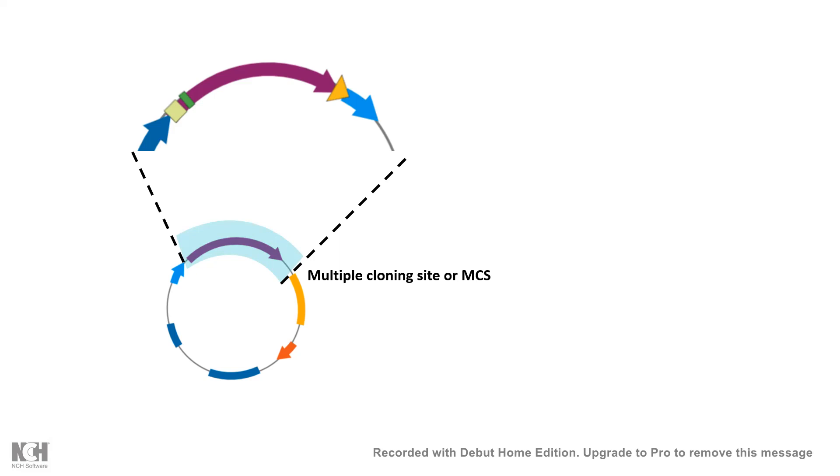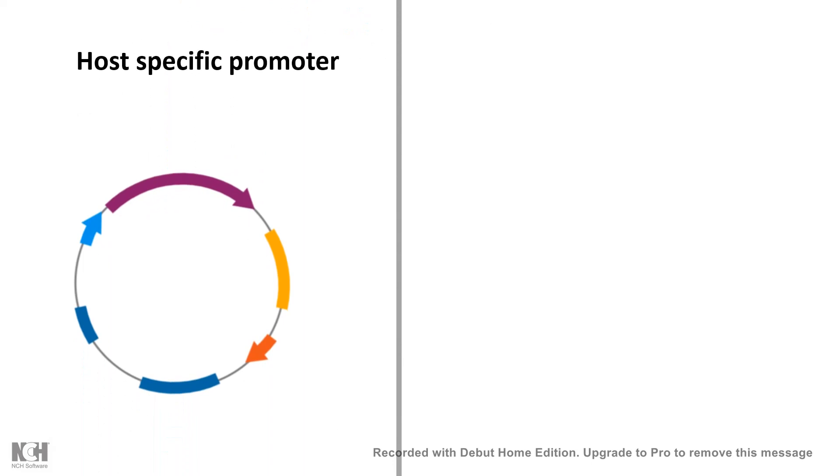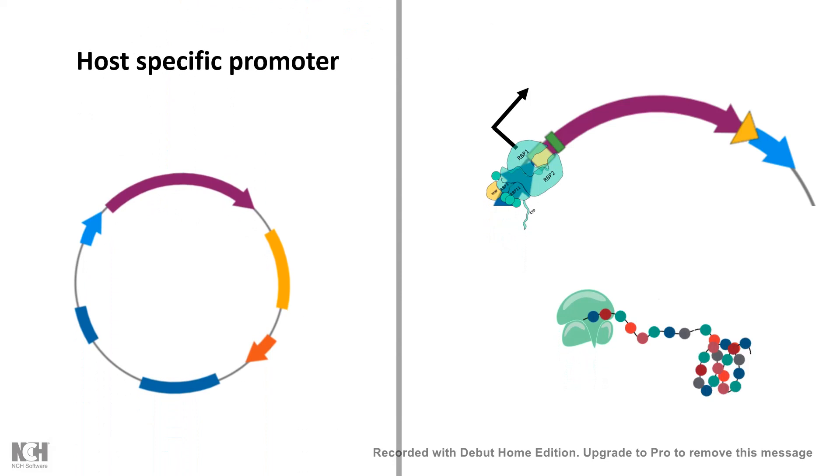Now since it would be expressed in both species, like both the host species, let's say bacteria and yeast, it should have host-specific promoters, otherwise the transcription and translation from this vector is not possible. So it should have host-specific promoters.